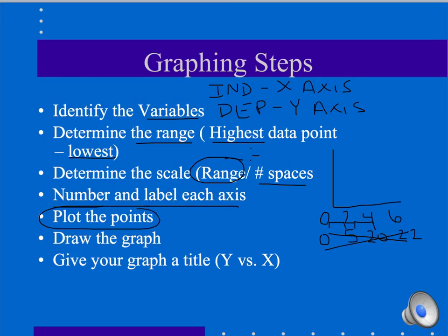We always plot our points, draw your graph. Sometimes this is going to mean where we actually connect the dots of our data. Sometimes we're going to make a best fit line. So that means some of the points may be below or above our line. We're also going to give our graph a title, which is always going to be the y versus the x axis. So these labels here are actually going to become a part of your title at the top.